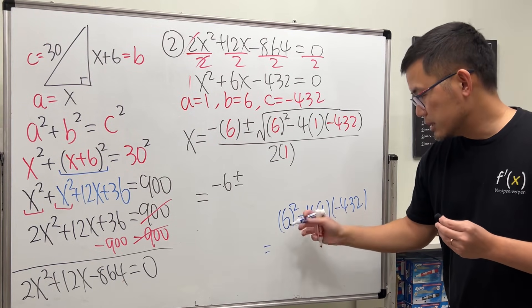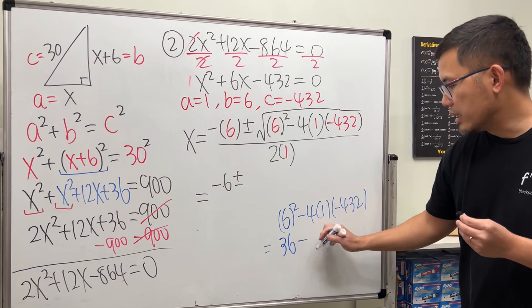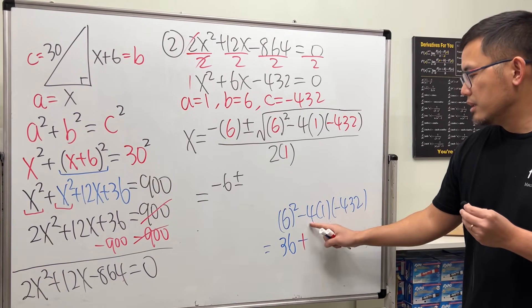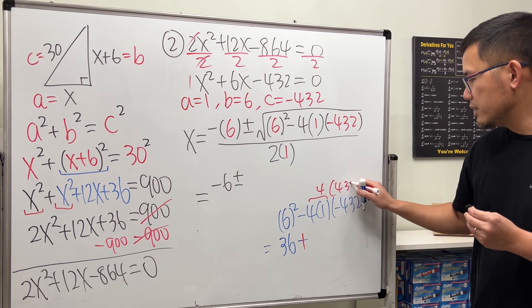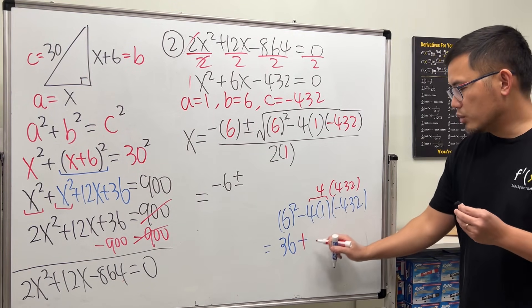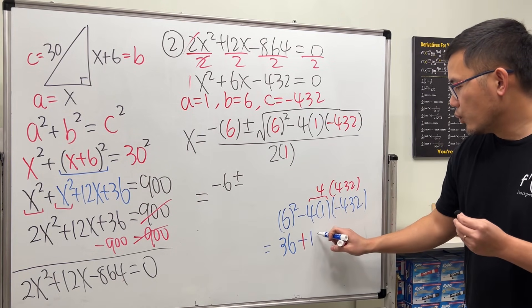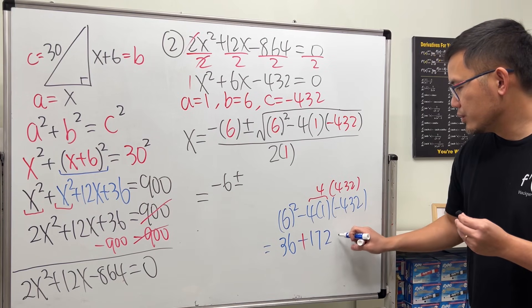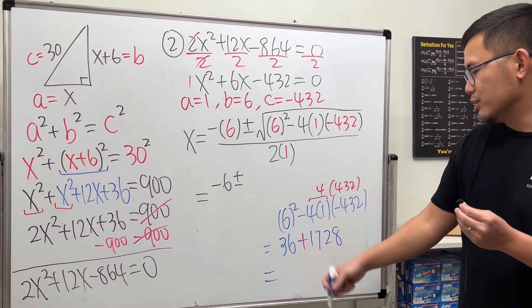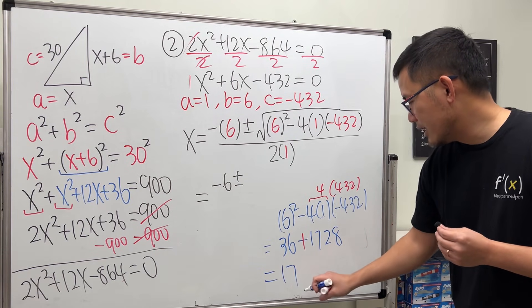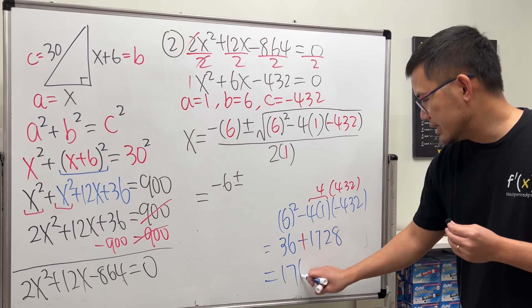6². 6 times 6. We get 36. And then minus times minus. We get a plus. This is just 4. Right? So, 4 times 432. We took care of the sign already right here. Work that out. Well, we get 1,728. And then, if we add them up, you know, use a calculator if you would like. 1,764.